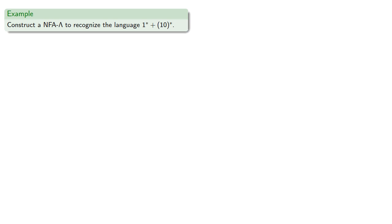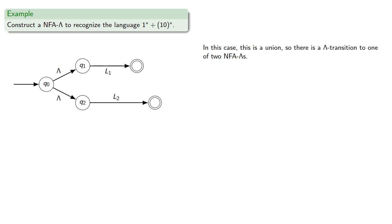And it's worth contrasting this to the NFA lambda recognizing this, which is a union of star closures. So since this is a union, we want a lambda transition to one of two NFA lambdas. The first language is one star, so a one takes us to an accepting state, and then we can use a lambda transition back to the starting point.